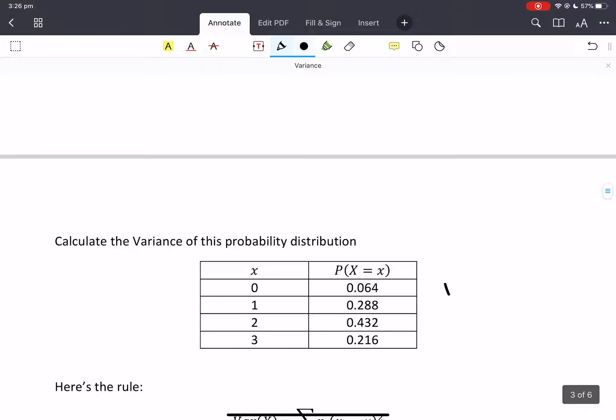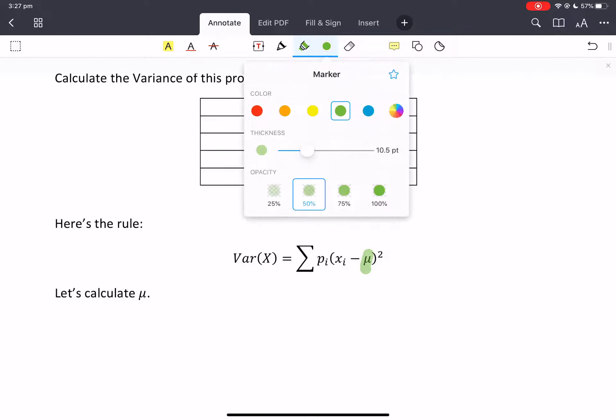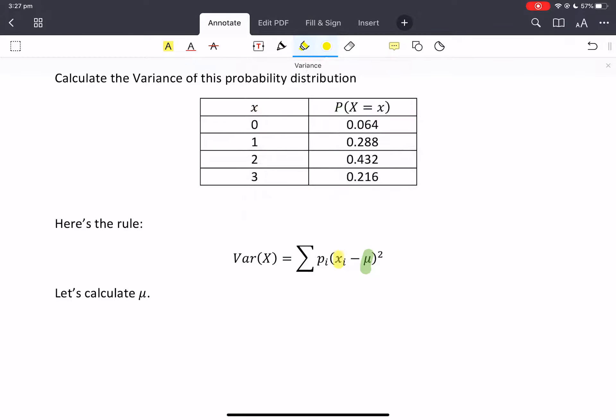Calculate the variance of the probability distribution. Probability distributions don't just go that way. P(x) equals x. They can go vertical as well. Don't get hung up on it. They can be any way the book desires. So the first thing we're going to see is that in this rule we have mu and we don't know what mu is. We actually do know our x's and our p's because there's our x's and there's our p's but we don't know mu.